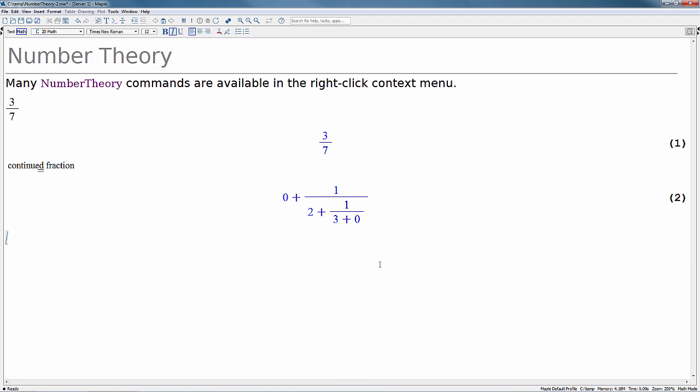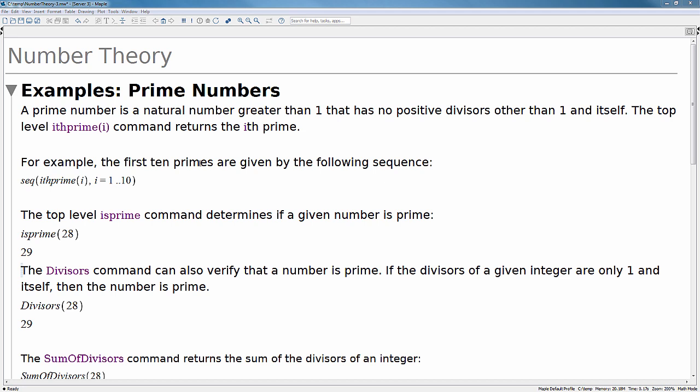For the next few examples, it's important to know that most of the commands used are also available in the right-click context menu. They're also available through using the equivalent Maple command. Next, let's spend some time looking at some examples with prime numbers. As we all know, a prime number is a natural number greater than 1 that has no positive divisors other than 1 and itself.